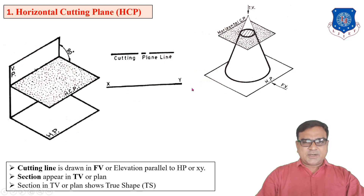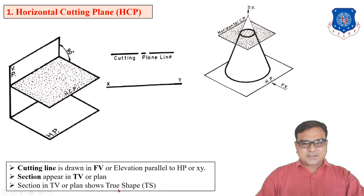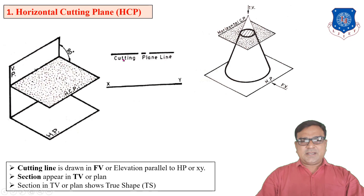When you draw the front view and top view on XY, the cutting plane is represented in the front view or elevation, and the top view gives the true shape of the section — that top view is known as the sectional top view. The cutting plane is represented as a chain line with thick ends and thin elsewhere.